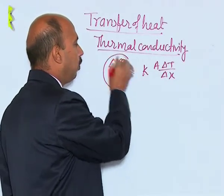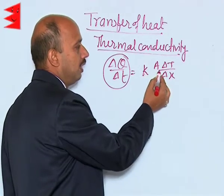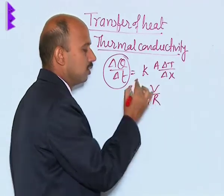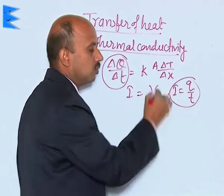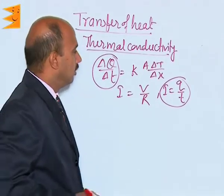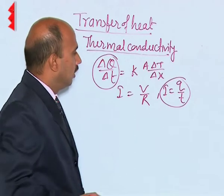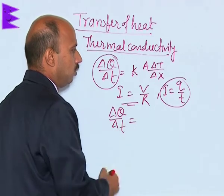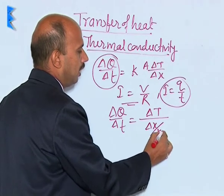In this formula, delta Q upon delta t is the rate of flow of heat, equal to k times A times delta T upon delta x. We know that in electricity, I equals V upon R and also I equals Q upon t. The rate of flow of charge through a conductor per unit cross-sectional area is known as electric current. Similarly, the rate of flow of heat through a solid is known as thermal current. So delta Q upon delta t equals delta T divided by delta x upon k times A.